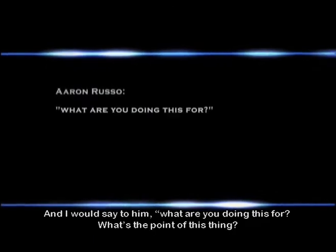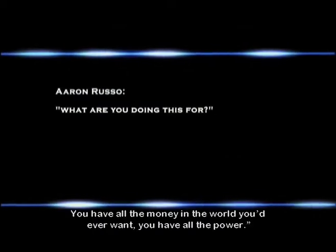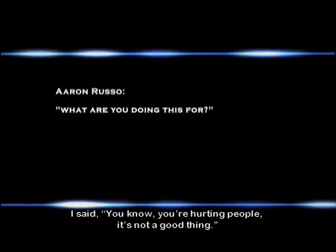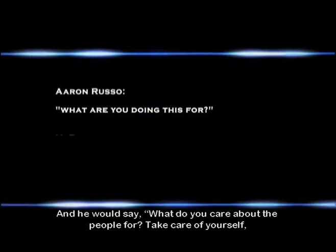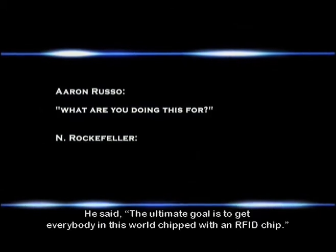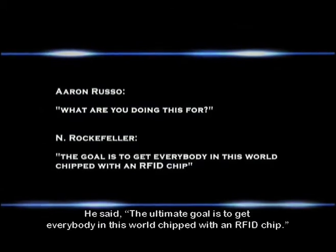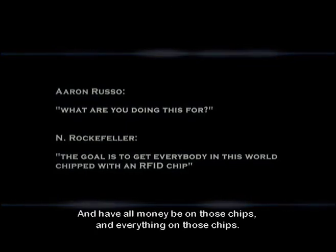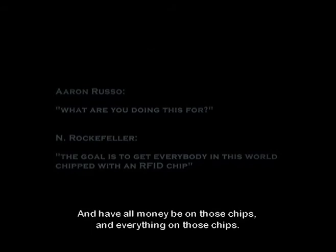Russo would say: 'What are you doing this for? What's the point? You have all the money in the world, all the power. You're hurting people — it's not a good thing.' And Rockefeller would say: 'What do you care about the people for? Take care of yourself and your family.' Russo then asked: 'So what are the ultimate goals here?' Rockefeller said: 'The ultimate goal is to get everybody in this world chipped with an RFID chip and have all money on those chips. And if anybody wants to protest what we do or violate what we want, we just turn off that chip.'